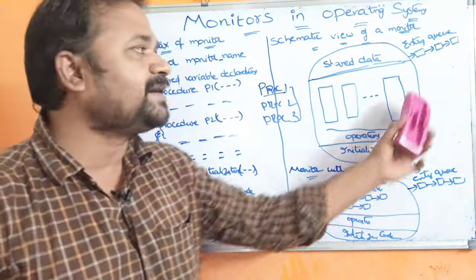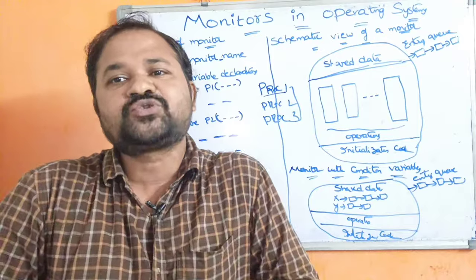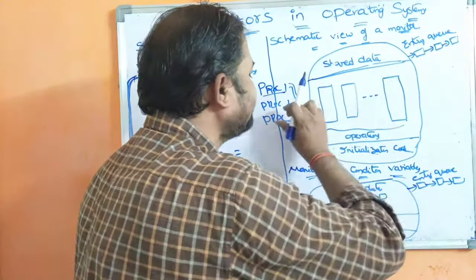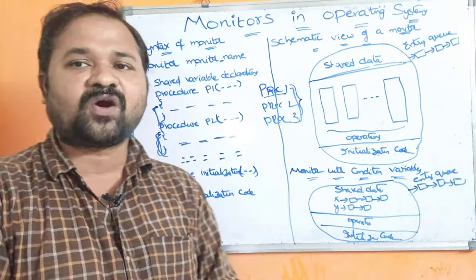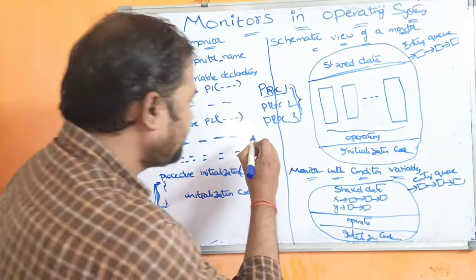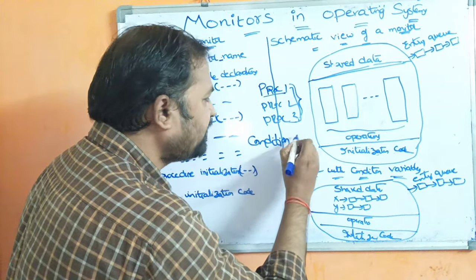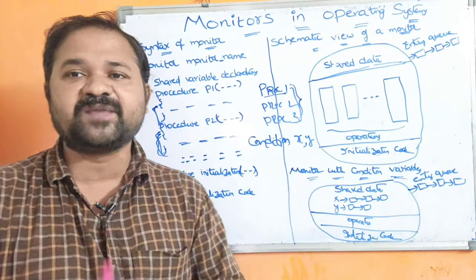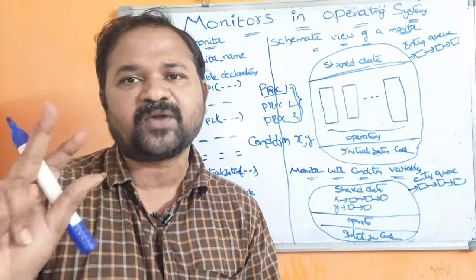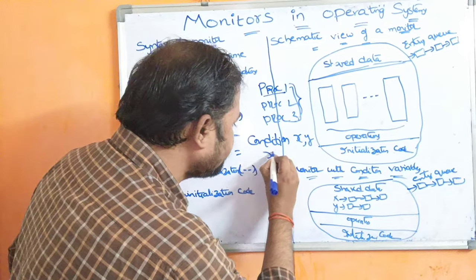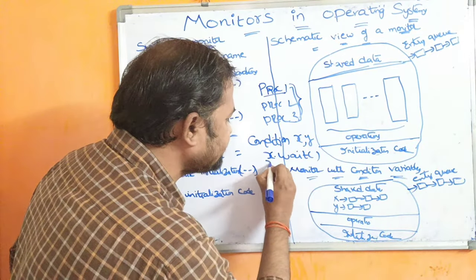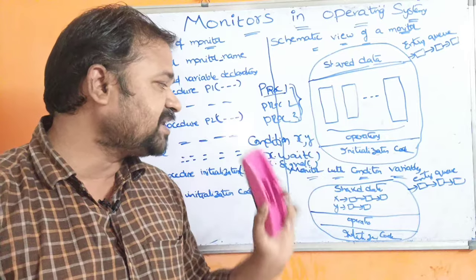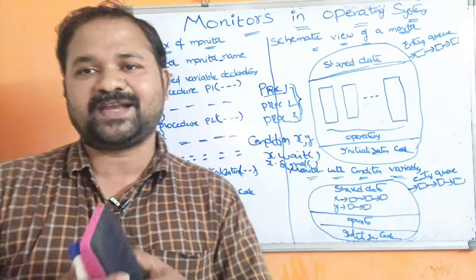Here we have an entry queue. The entry queue contains a list of processes that want to enter into the monitor. Here we have three processes P1, P2, P3 in the entry queue. Next, we have a concept called condition variable. The advantage of a condition variable is that we can perform two operations on it: the wait operation (x.wait) and the signal operation (x.signal). Similarly, we can perform y.wait and y.signal operations on condition variable y.